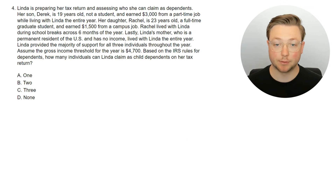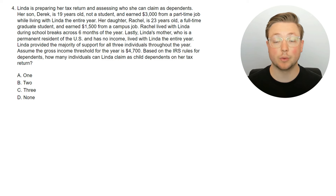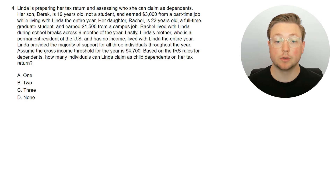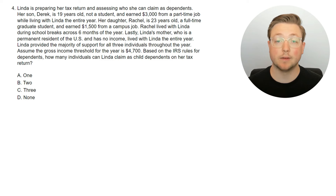Here's question four. Linda is preparing her tax return and assessing who she can claim as dependents. Her son Derek is 19 years old, not a student, and earned $3,000 from a part-time job while living with Linda the entire year. Her daughter Rachel is 23 years old, a full-time graduate student, and earned $1,500 from a campus job — Rachel lived with Linda during school breaks across six months of the year. Linda's mother is a permanent U.S. resident with no income who lived with Linda the entire year. Linda provided the majority of support for all three. Assume the gross income threshold is $4,700. How many individuals can Linda claim as child dependents? Take a second, pause the video, and see if you can figure it out.